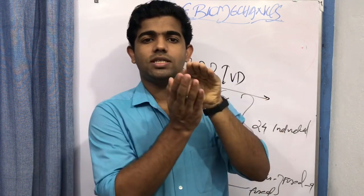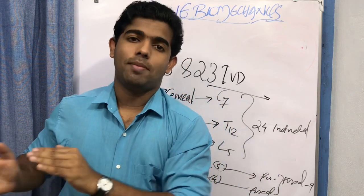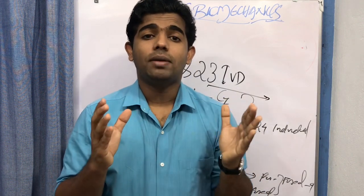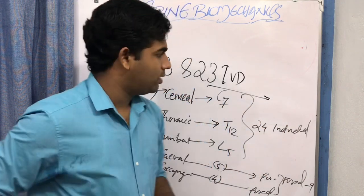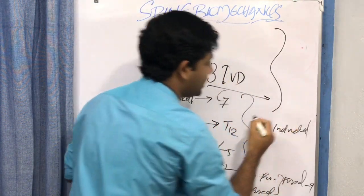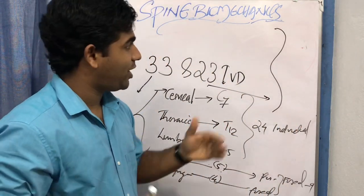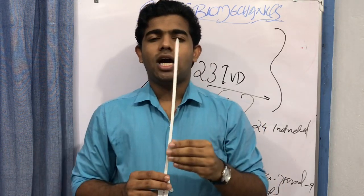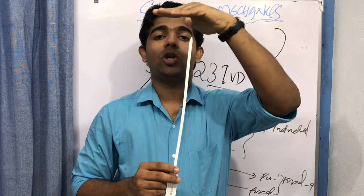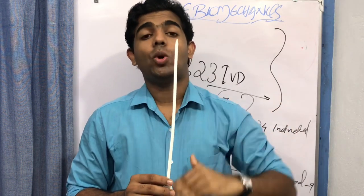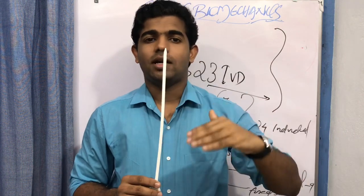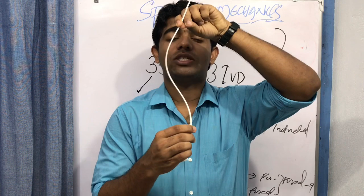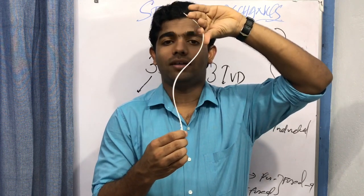When you look at a person's vertebral column from the side, it is a curved rod rather than a straight rod. A straight rod has a limit to the compressive load it can withstand. In order to be more efficient at withstanding compressive load, the vertebral column has a curved structure, which makes it more efficient in load-bearing.